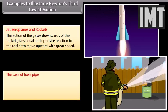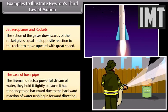The case of hose pipe: the fireman directs a powerful stream of water. They hold it tightly because it has tendency to go backward due to the backward reaction of water rushing in forward direction.